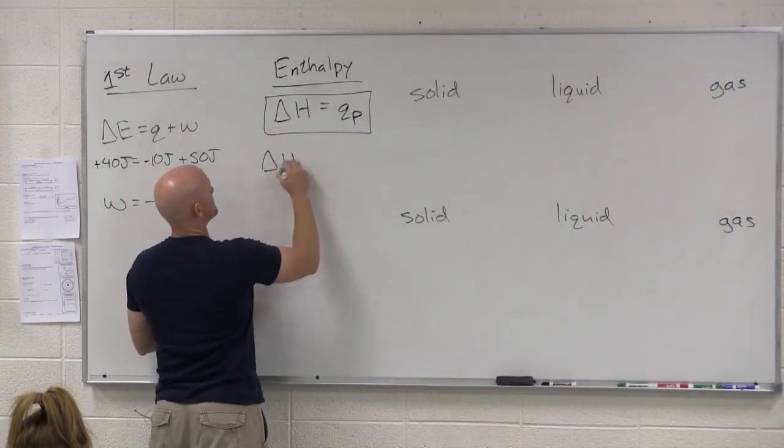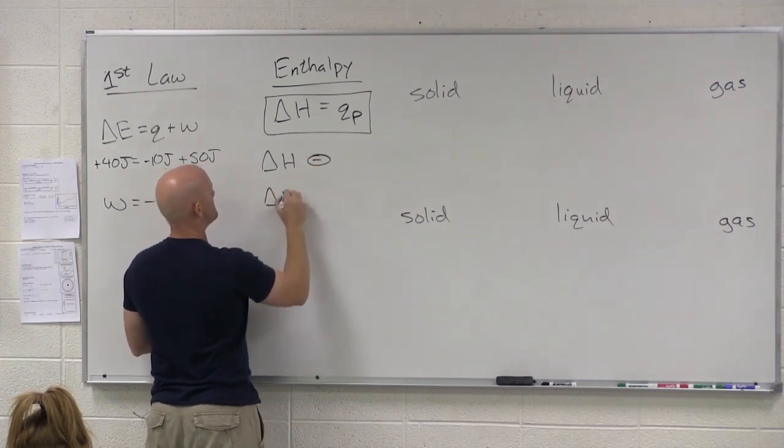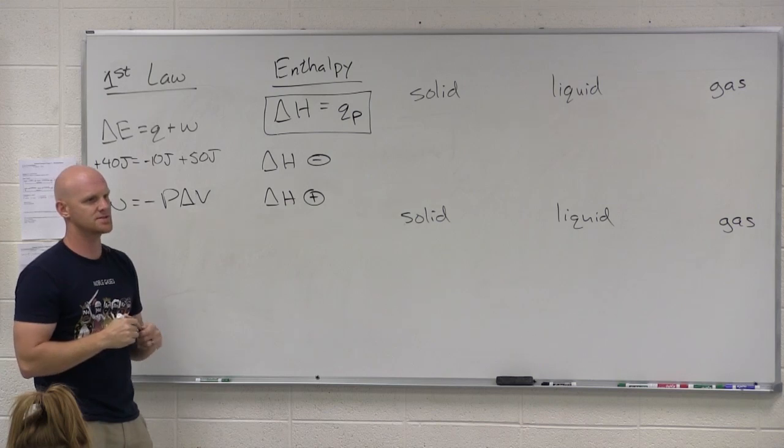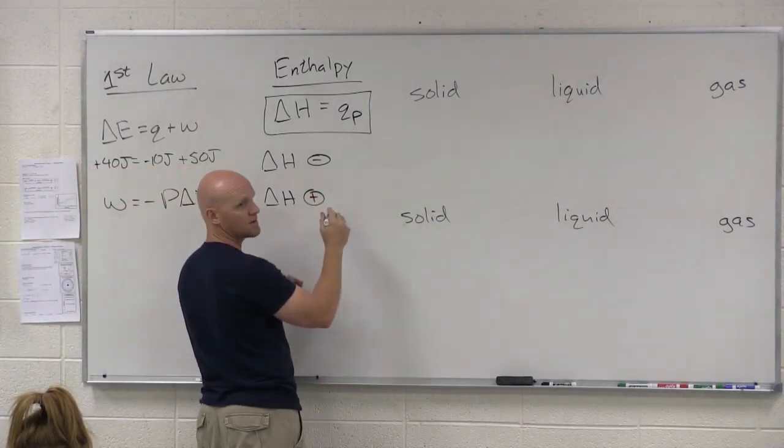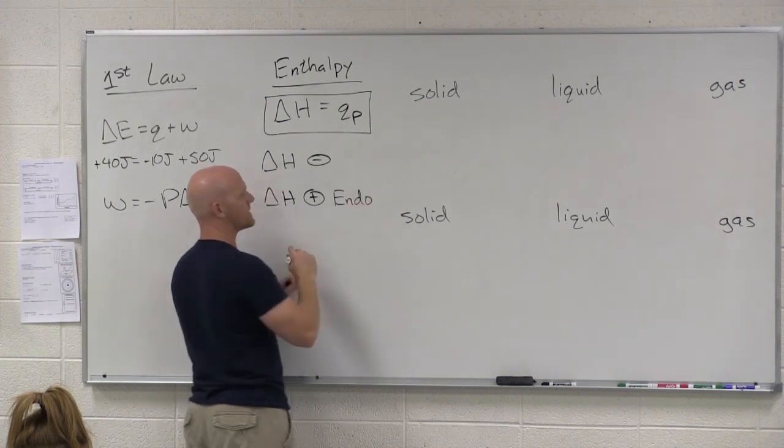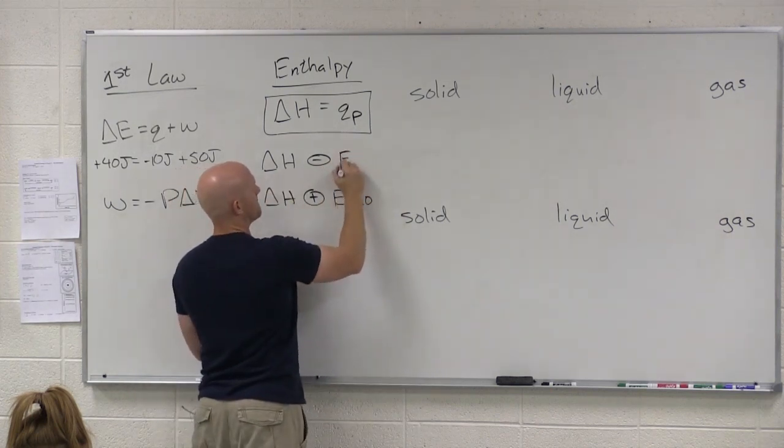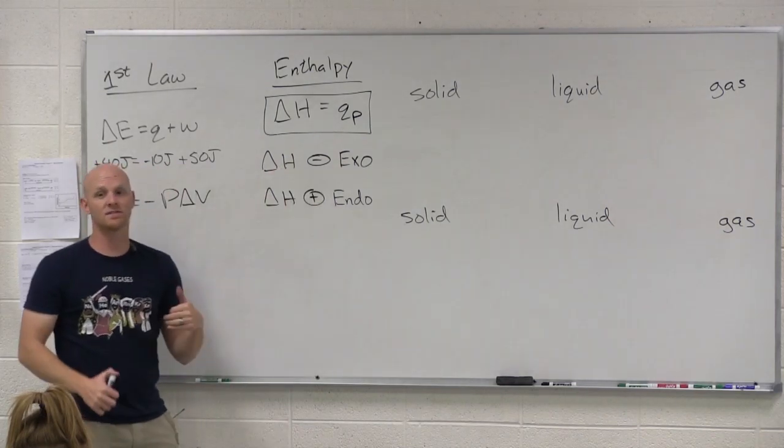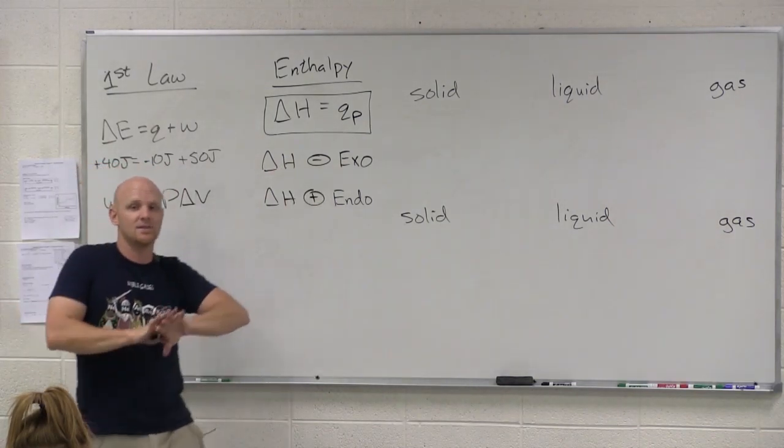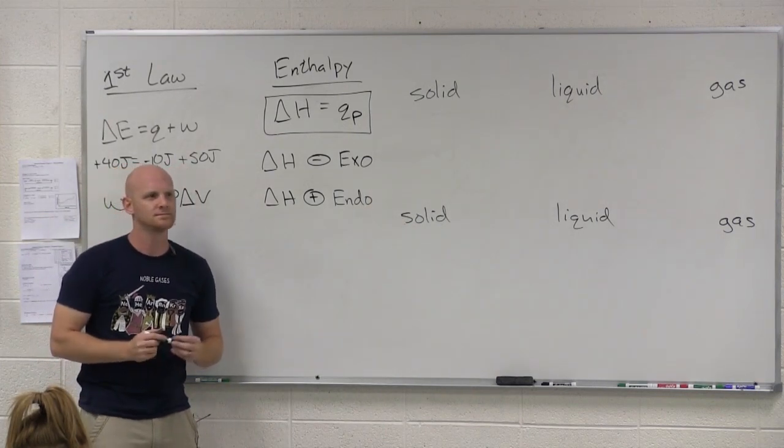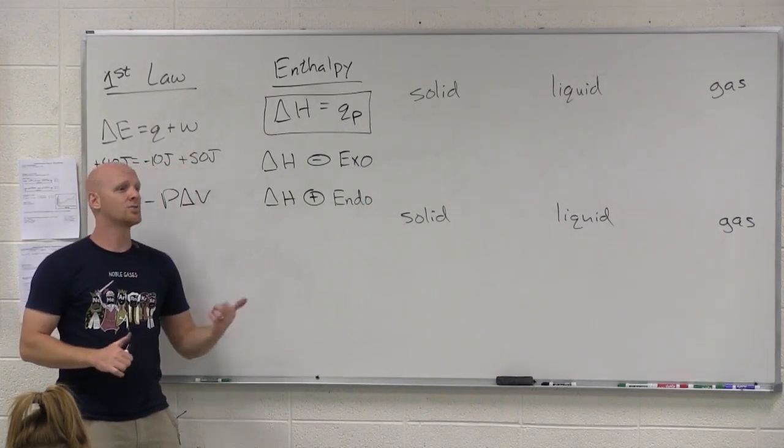Two situations. Delta H is either negative or delta H is positive. And what do we call the names here for those two situations? Delta H is more than zero. It's going to be endothermic. Delta H is positive or greater than zero. It's endothermic. And delta H is negative. Exothermic. So notice what this really means. Delta H is negative. It means the system is losing the heat. Heat is being evolved from the system. Where's it going? Into the surroundings.